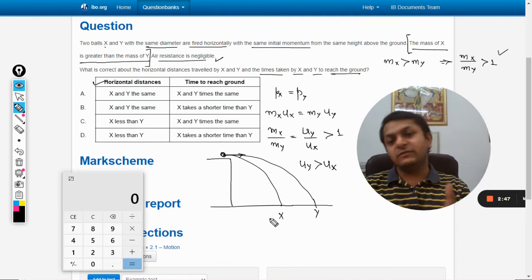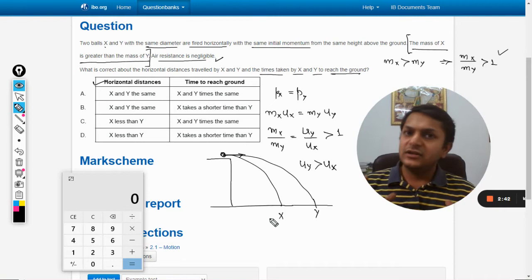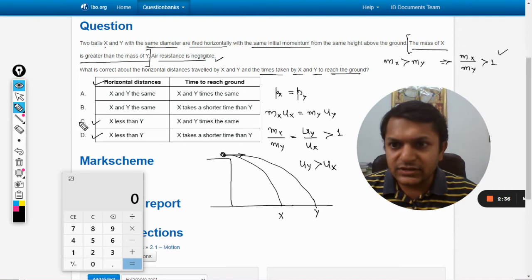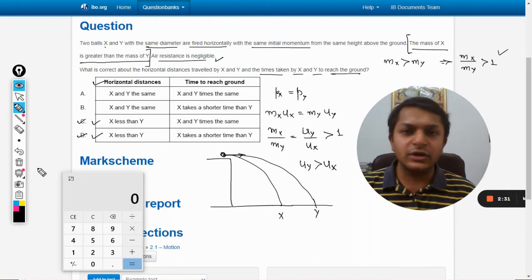So the body that is reaching the farther distance will be Y, and the trajectory of X will be somewhat like this. So the distance traveled in a horizontal manner by X will be lesser than Y. We are sure about that.